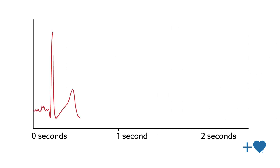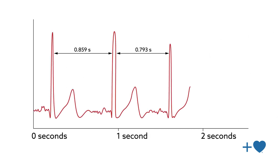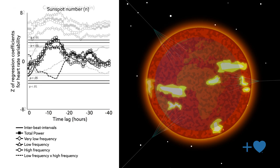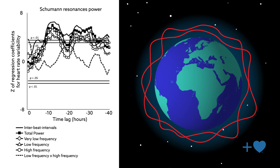The team found that heart rate variability significantly correlated to variations in three key variables: cosmic rays, solar activity, and Schumann resonances.